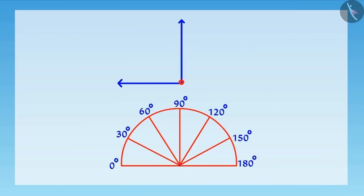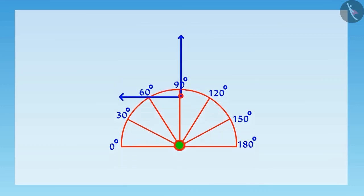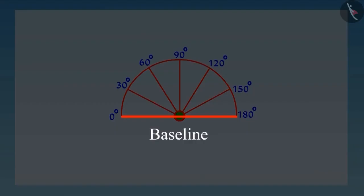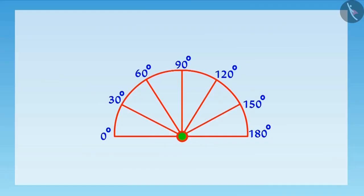Now, if we have to measure an angle, we will place the center point of this protractor at the vertex of the angle. And remember, one line of angle must be placed along the baseline of the protractor. Now, this second line of the angle tells us the correct measurement of the angle.